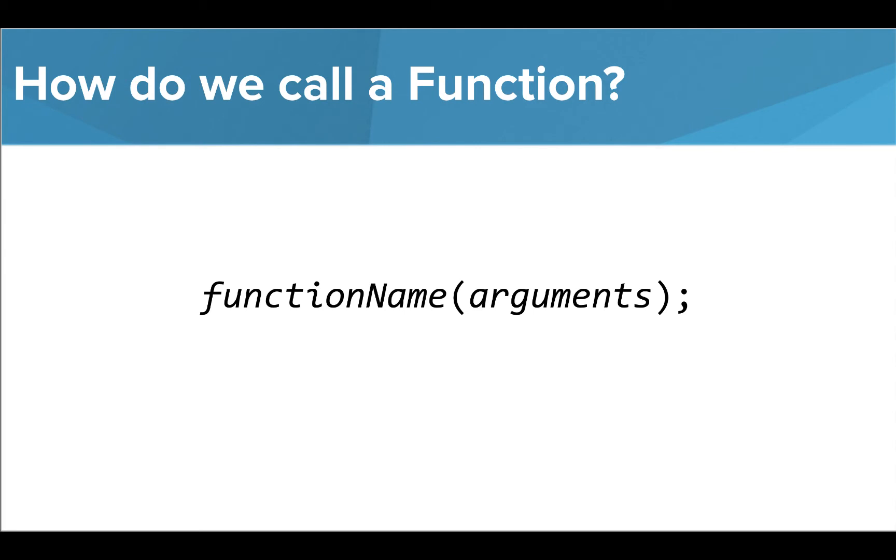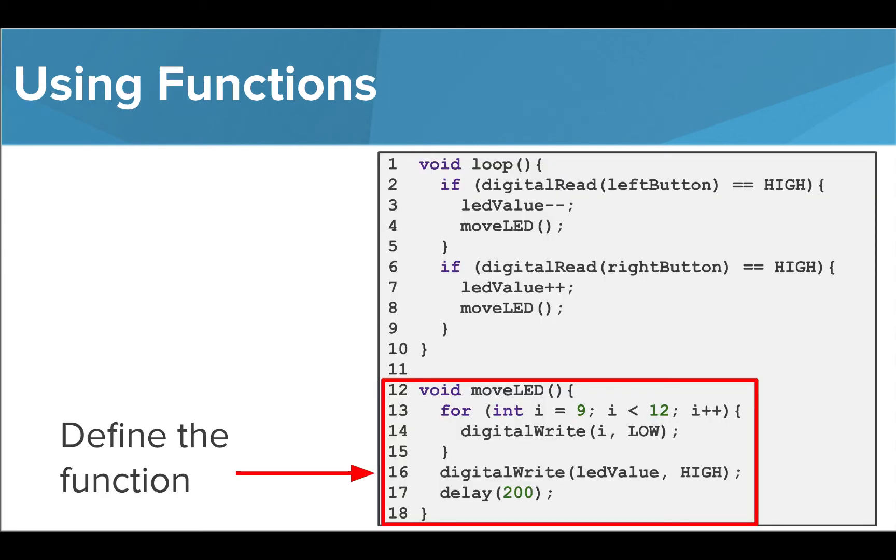Let's look at an example. Assume that we have assigned our variables and added information to our setup function at the beginning of the code. At the bottom of this program, we are defining a function called moveLED.